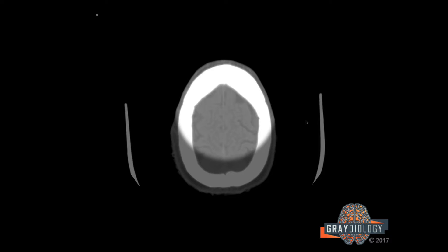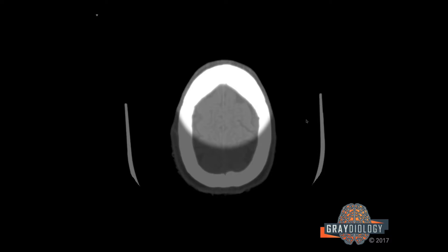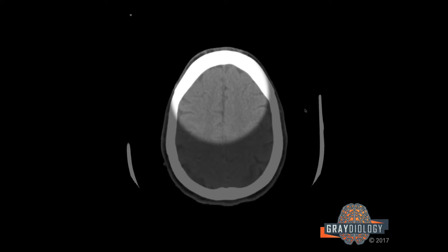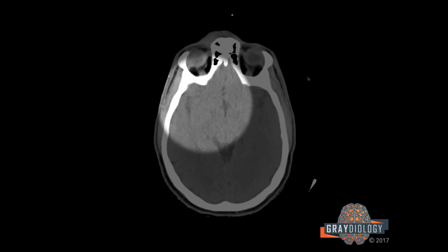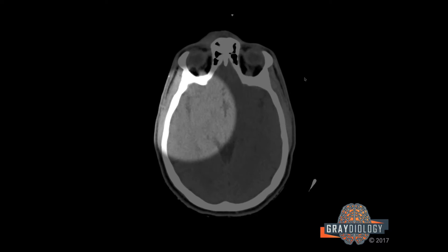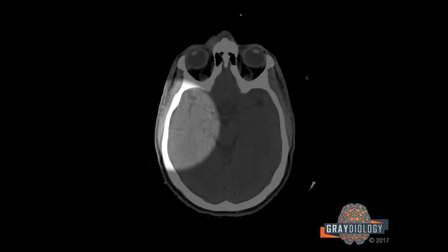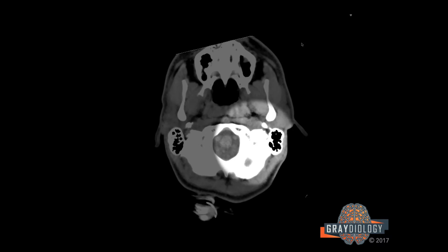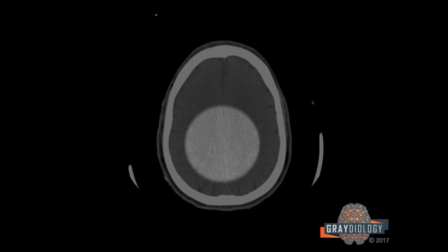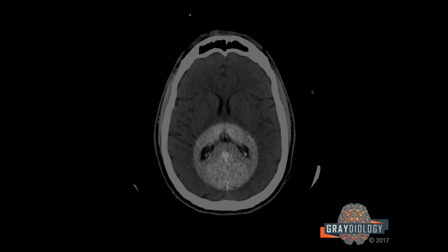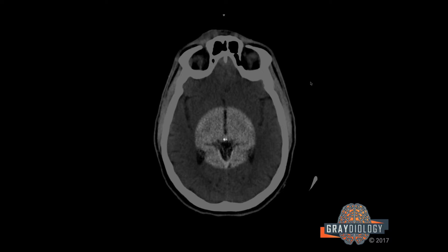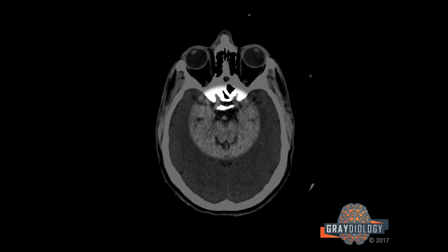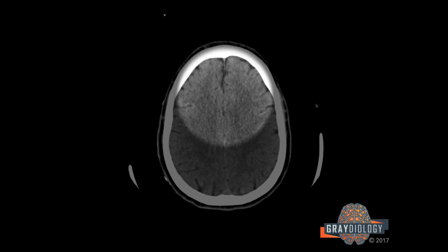Then I'll go to a subdural window, which is a little bit wider than a brain window — I use 4200. I look at the frontal lobe-skull interface, then the right side, posterior, then left side. Once I've gone through that, I will change the window to 4080. The first place I look is the dependent lateral ventricles and the interpeduncular fossa in order to assess for subarachnoid hemorrhage.